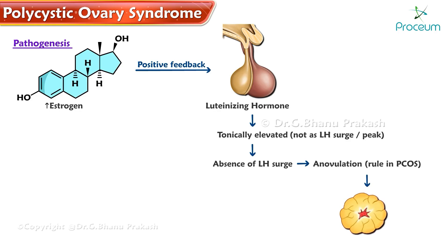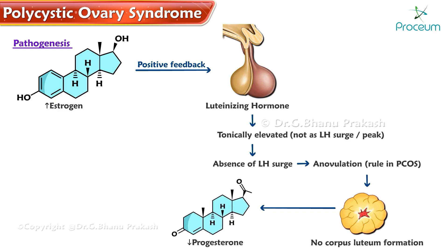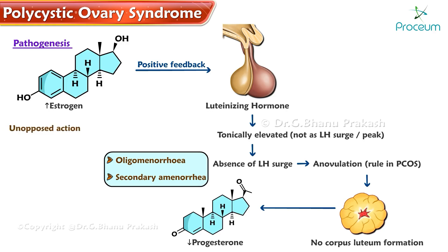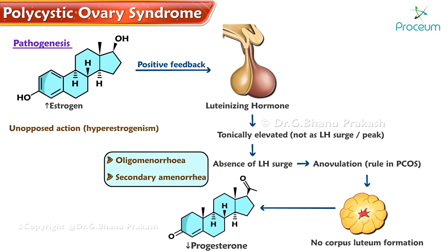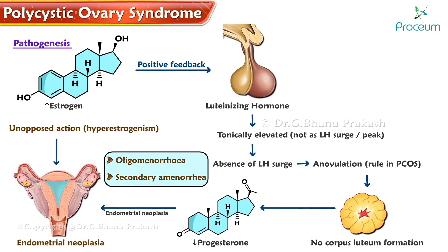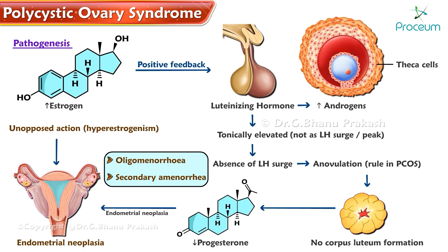As there is no ovulation, there is no corpus luteum formation, and no corpus luteum means no progesterone — hence progesterone levels fall. Low progesterone causes oligomenorrhea or sometimes even secondary amenorrhea. Unopposed action of estrogen due to hyperestrogenism with no progesterone predisposes the endometrium to neoplasia. Increased luteinizing hormone causes further elevation of androgens, as LH acts upon the theca cells to release more androgens — the vicious cycle goes on.